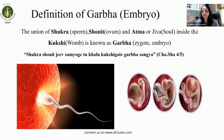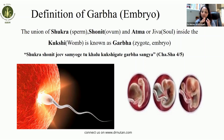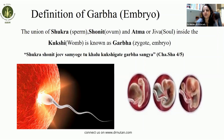Today we will understand what Ayurveda says and how it defines garbha. Garbha is defined as the union of shukra (sperm), shonit (ovum), and atma (soul) inside the womb — what modern science calls a zygote or embryo. This embryo grows further and becomes a fetus. Importantly, the formation happens with the union of three factors, the last being the soul, which Ayurveda considers a very important factor not mentioned in modern science.